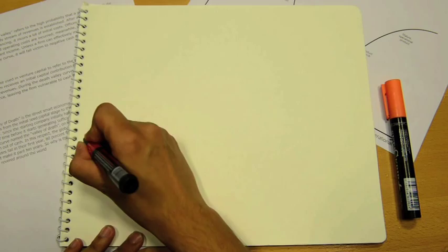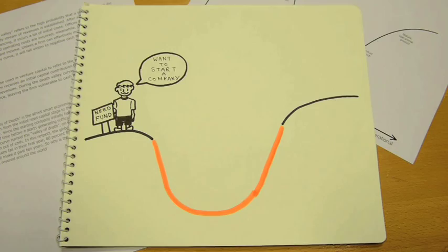What exactly is a death valley curve? The death valley curve is startup jargon that refers to the crucial period a startup faces between its first round of funding and when it finally begins to generate revenue.